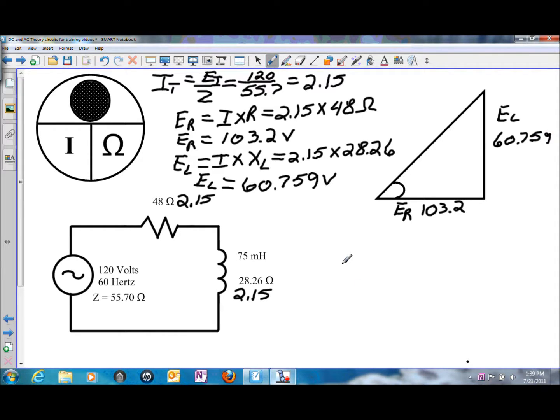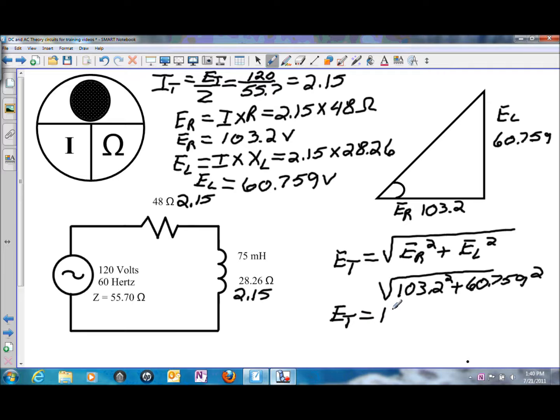And we can use Pythagorean's Theorem, so E total, even though we have E total, we're just proving it, is going to be equal to the square root of ER squared plus EL squared. We put the values in, 103.2 volts of resistive voltage squared plus 60.759 volts of reactive voltage squared will give us a calculated voltage of 119.75.